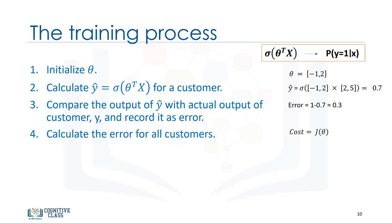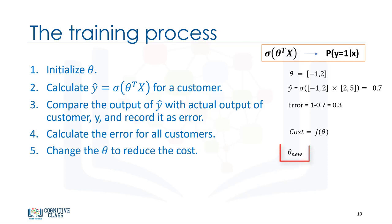The cost function basically represents how to calculate the error of the model, which is the difference between the actual and the model's predicted values. The cost shows how poorly the model is estimating the customer's labels. Therefore, the lower the cost, the better the model is at estimating the customer's labels correctly, and what we want to do is minimize this cost. Step 5: Because the initial values for theta were chosen randomly, it's very likely that the cost function is very high. So we change theta in such a way to hopefully reduce the total cost. Step 6: After changing the values of theta, we go back to step 2 and start another iteration, keeping doing those steps until the cost is low enough.